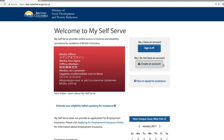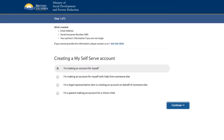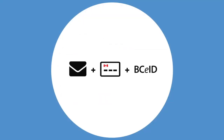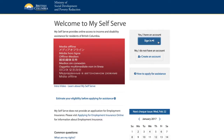What will you need to set up an account? As a single person, you will need to provide an email address, a social insurance number, and a basic BCE ID. The basic BCE ID provides the username and password for your MySelfServe account. If you don't have a basic BCE ID, you can set one up in just a few minutes when you create your MySelfServe account.